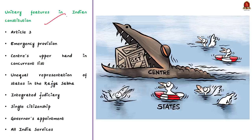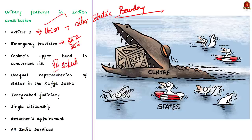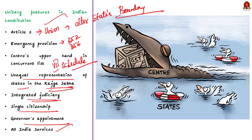Some unitary features in the Indian constitution include: Article 3, which allows the Union to alter the boundaries of a state without the state's consent; emergency provisions such as National Emergency under Article 352 and President's Rule under Article 356; the Concurrent List under the Seventh Schedule, where the Union government has precedence over states; and other features like unequal representation of states in the Rajya Sabha, integrated judiciary, single citizenship, Governor's appointment, and All India Services.